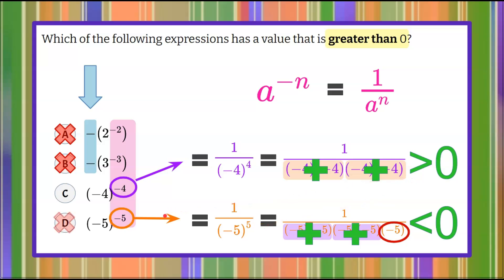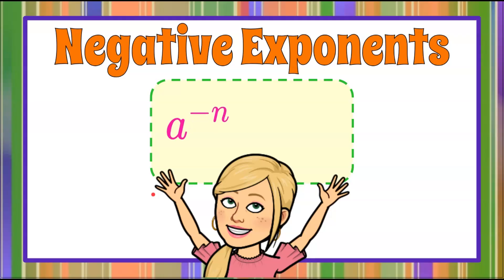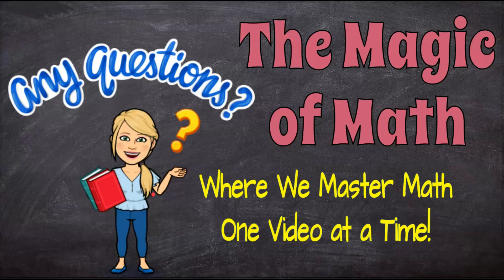Therefore, we can eliminate choice D, clear our workspace, and we can see that answer C is the only value here that would be greater than 0. And there you have it — that is how you interpret negative exponents using a rule. Thanks for joining me today at The Magic of Math, where we continue to master math one video at a time. I hope you'll subscribe and have a great day.